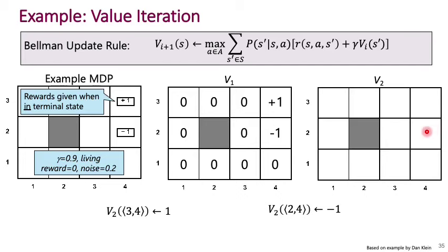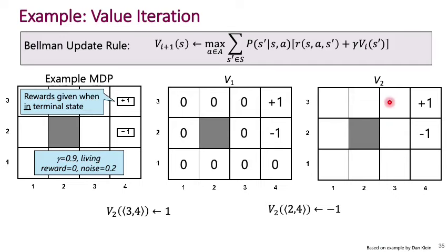Value iteration asks us to sweep over all states and apply the Bellman update rule, so V2 is computed from V1. For the terminal states at squares (3,4) and (2,4), V2 stays at plus one and minus one — the episode terminates there with no future rewards. Let's look at something more interesting: square (3,3), which has various neighboring squares you can end up at depending on your action.